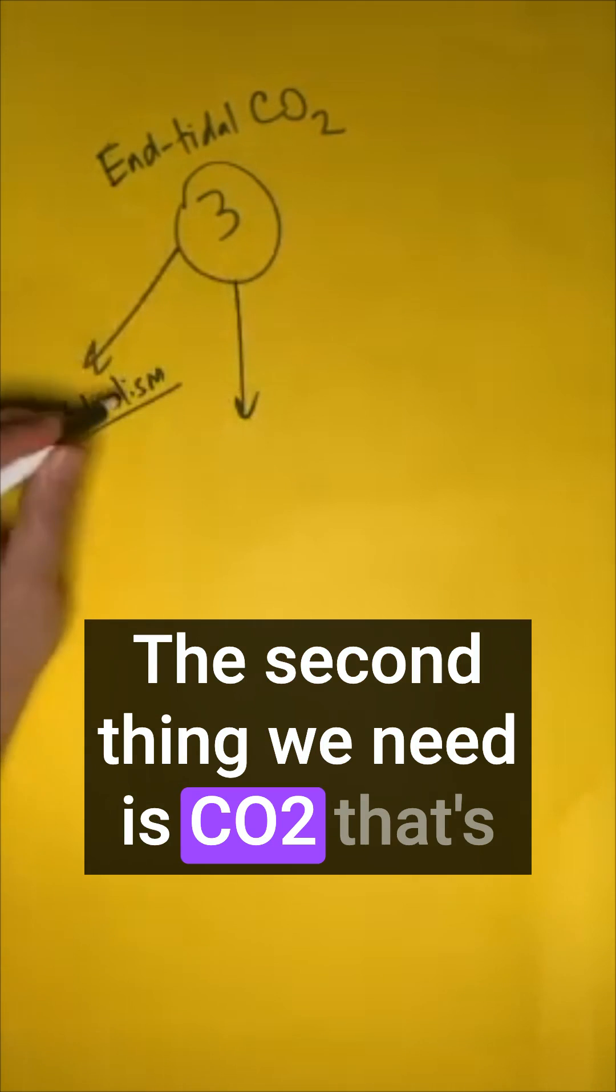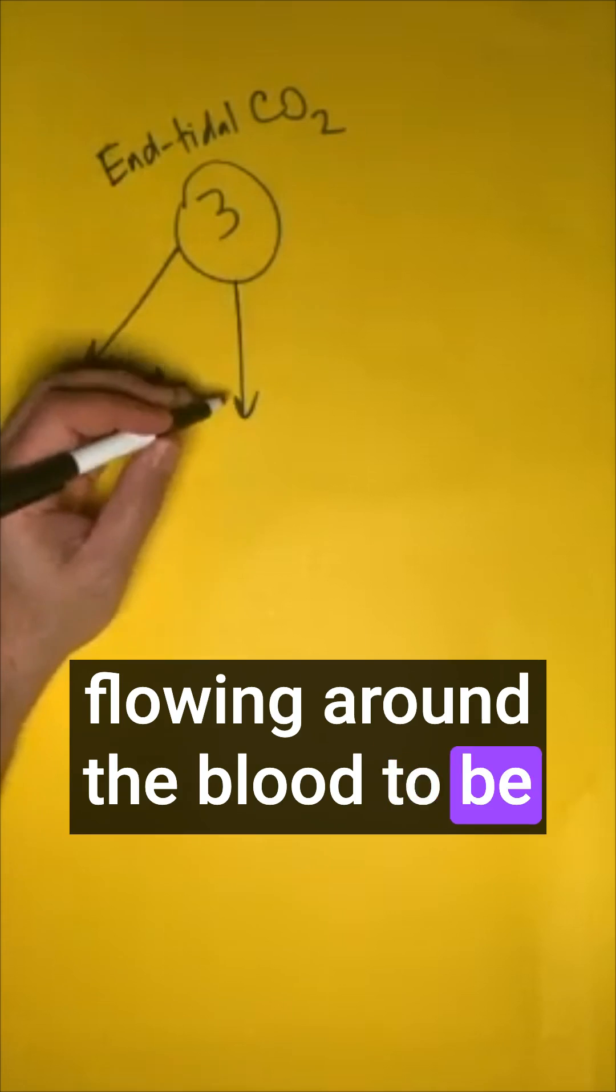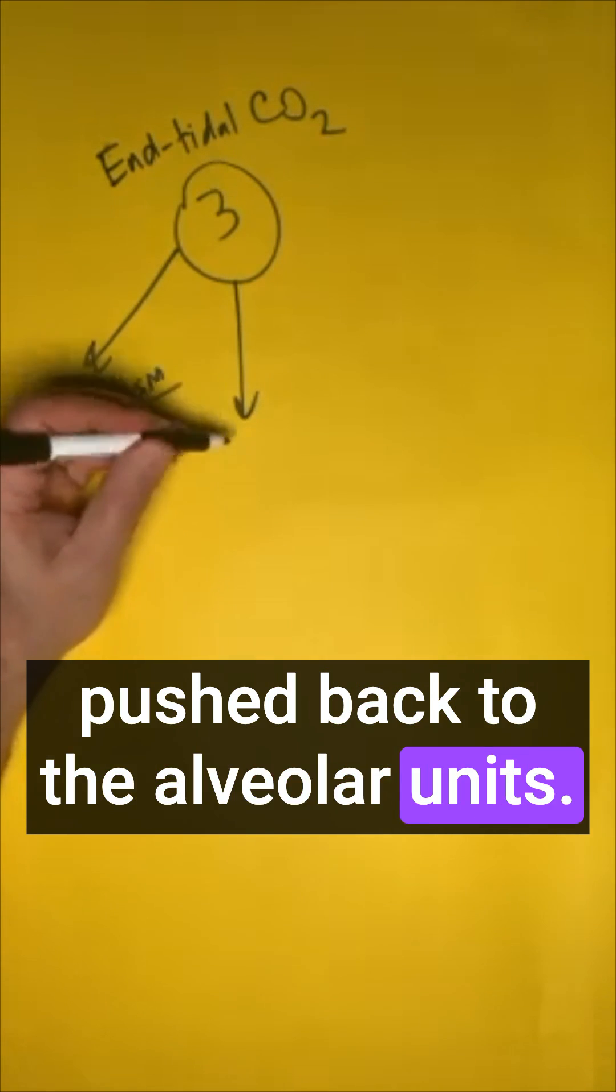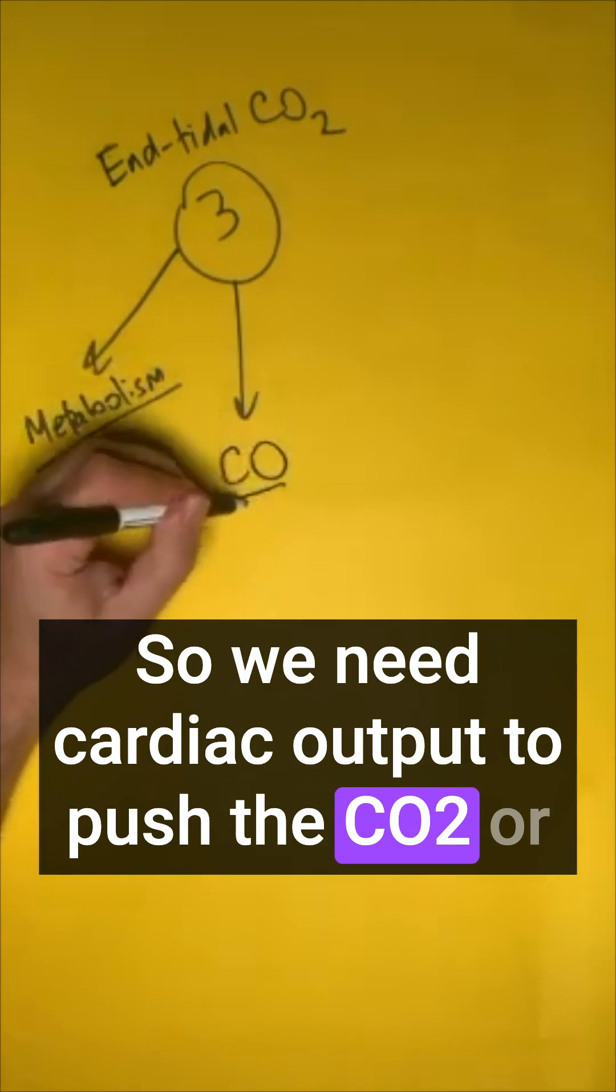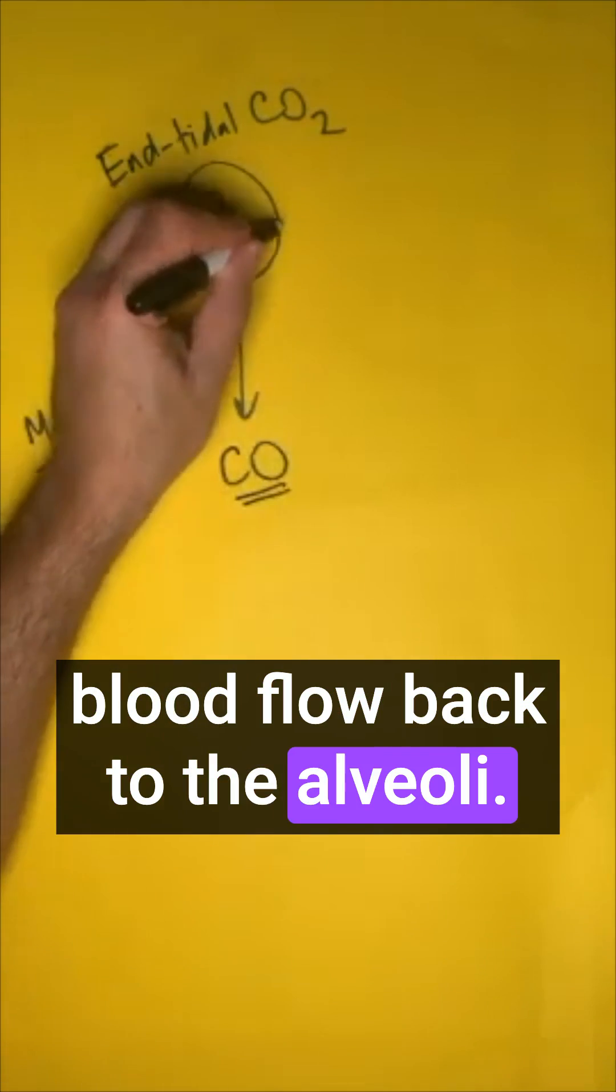The second thing we need is CO2 that's flowing around the blood to be pushed back to the alveolar units. So we need cardiac output to push the CO2 or blood flow back to the alveoli.